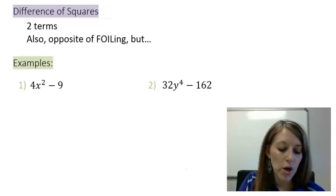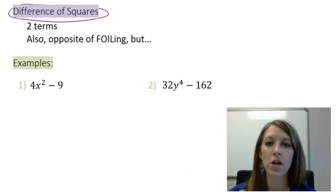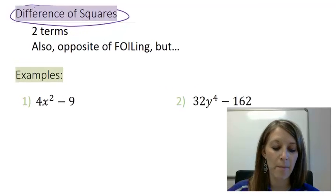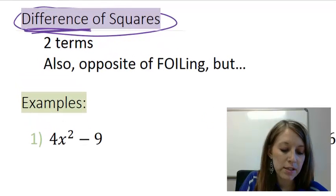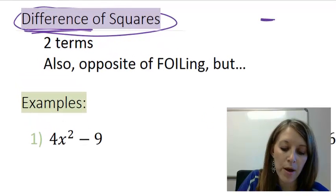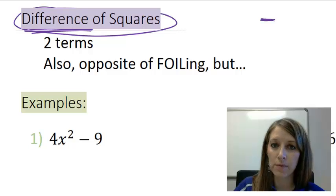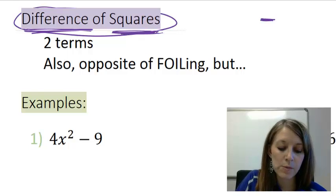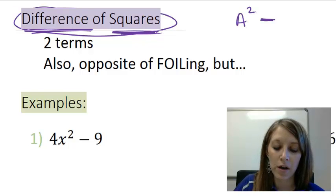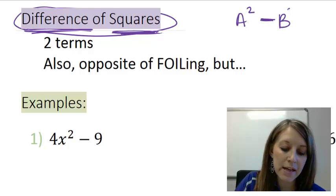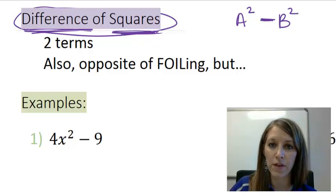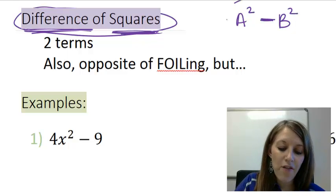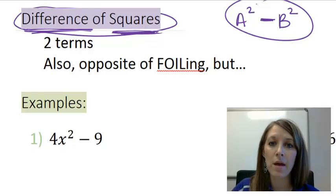Now I want to concentrate on the name of difference of squares here because that will tell you exactly how these should be set up. The first word is difference, meaning that our operations should be a subtraction. And the second word meaning squares, meaning we should have something as a square in the first part of this, and something as a square in the second part of this. If it doesn't follow this format here, then you will not be able to factor it as a difference of squares.